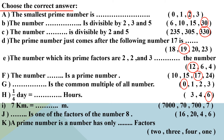Letter I: 7 kilometres equals how many metres? To convert from big units to small units, we multiply. From kilometres to metres, multiply by 1,000. So 7 × 1,000 = 7,000 metres.